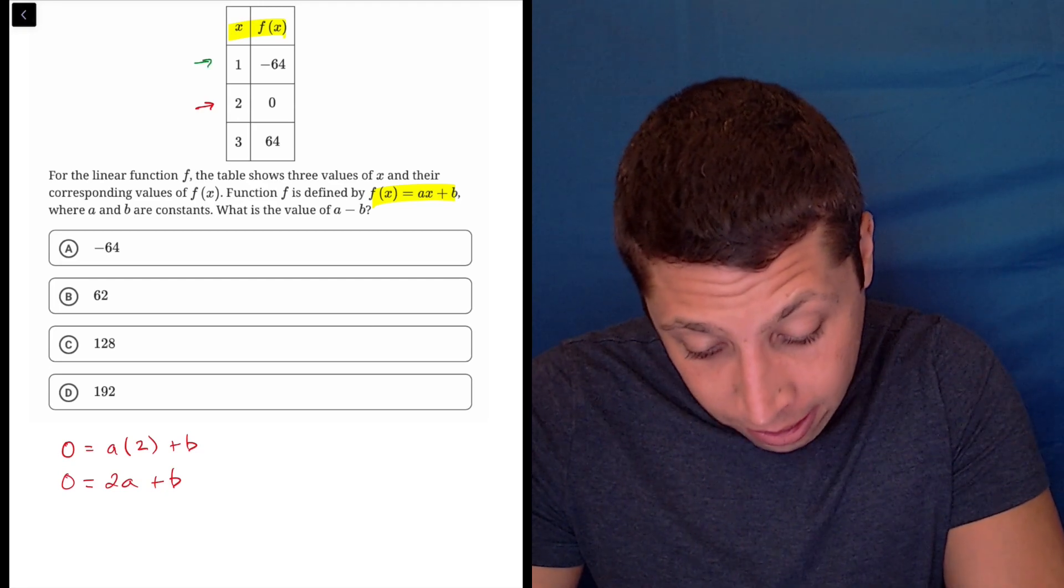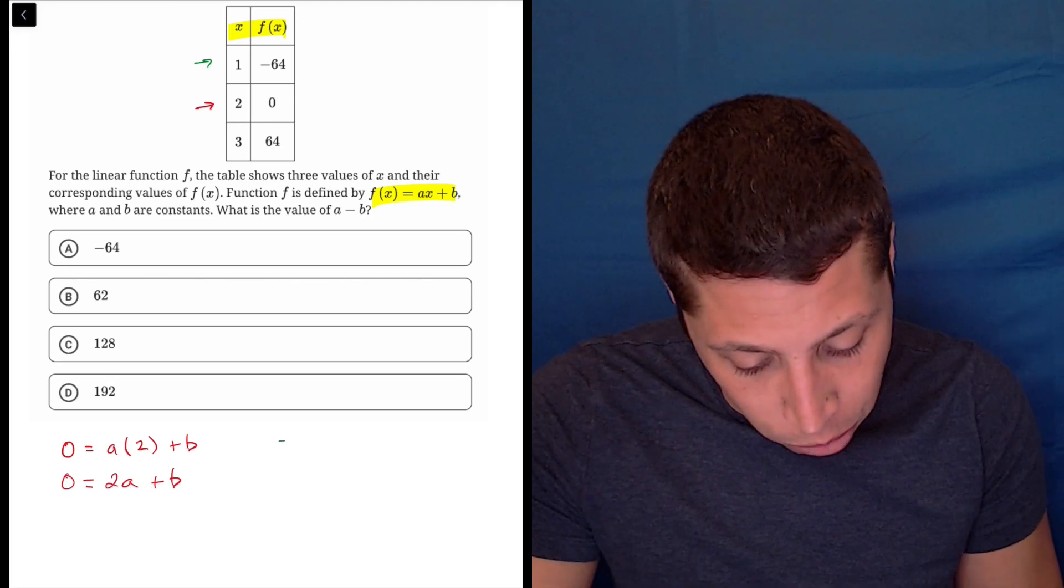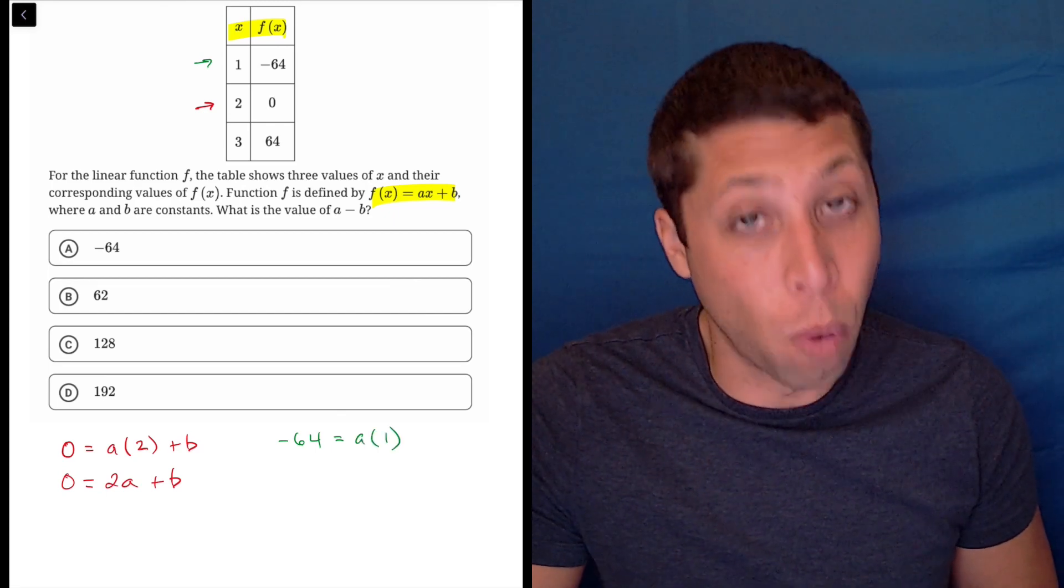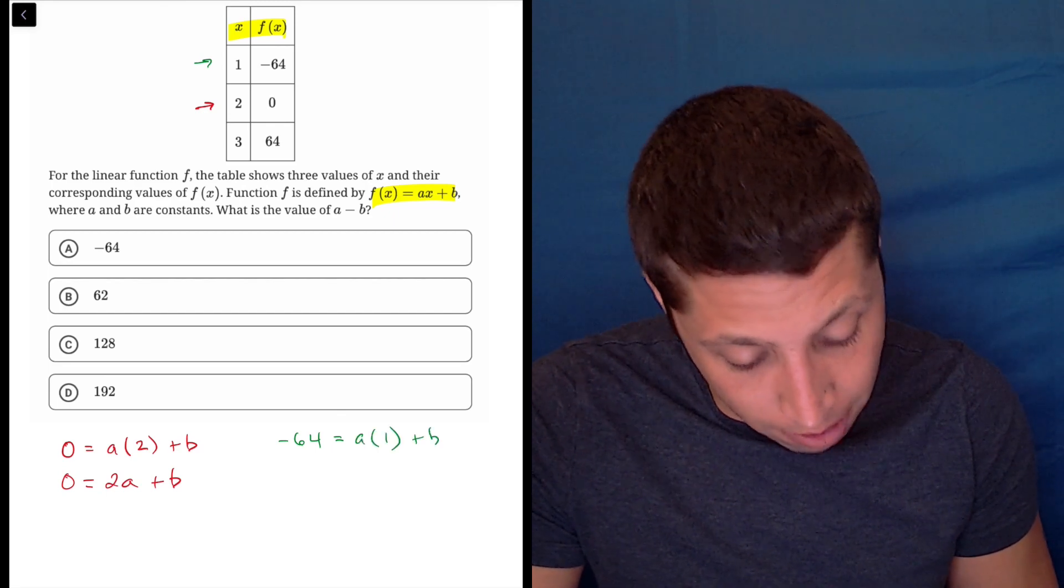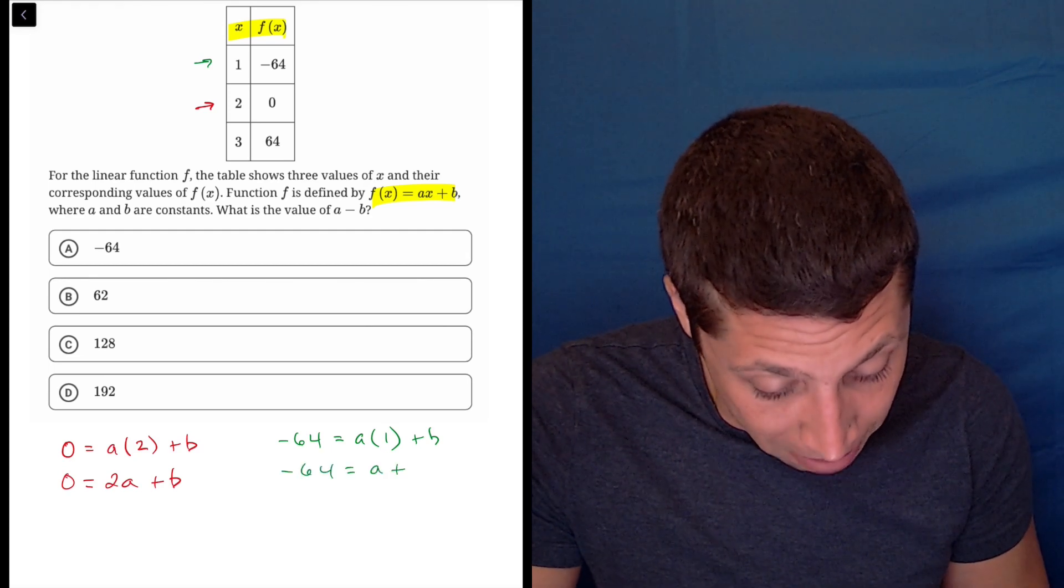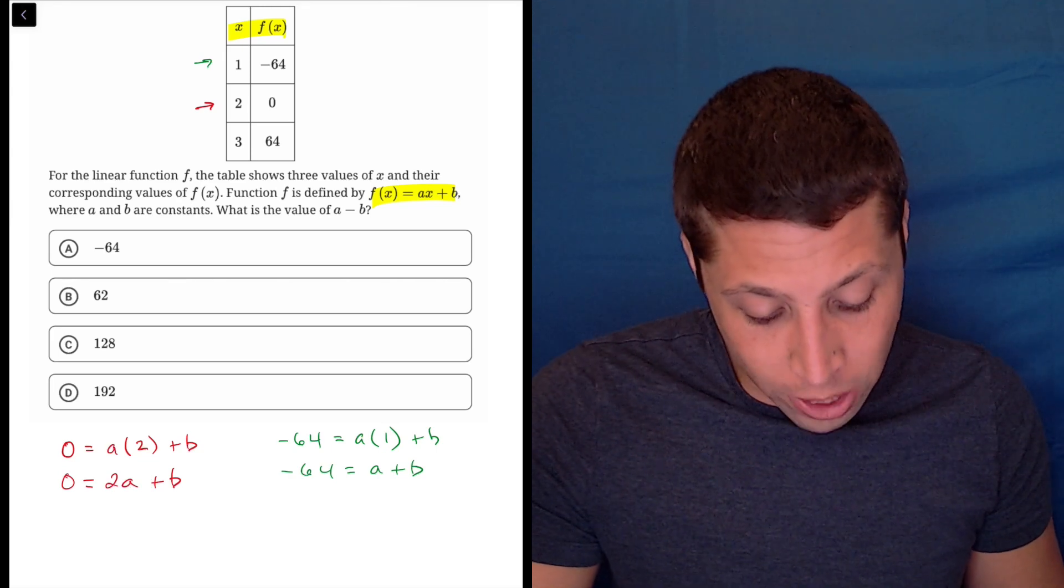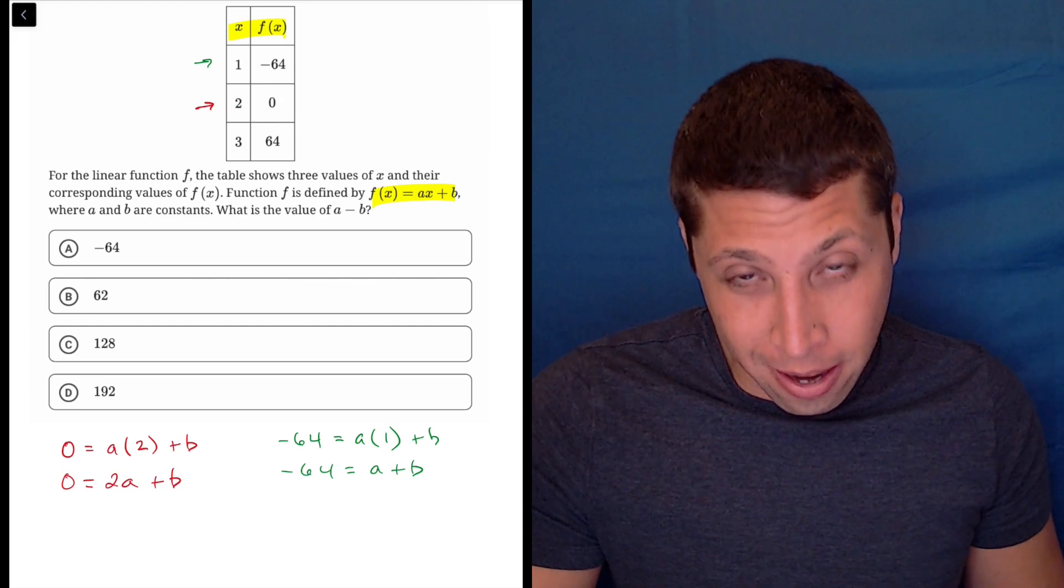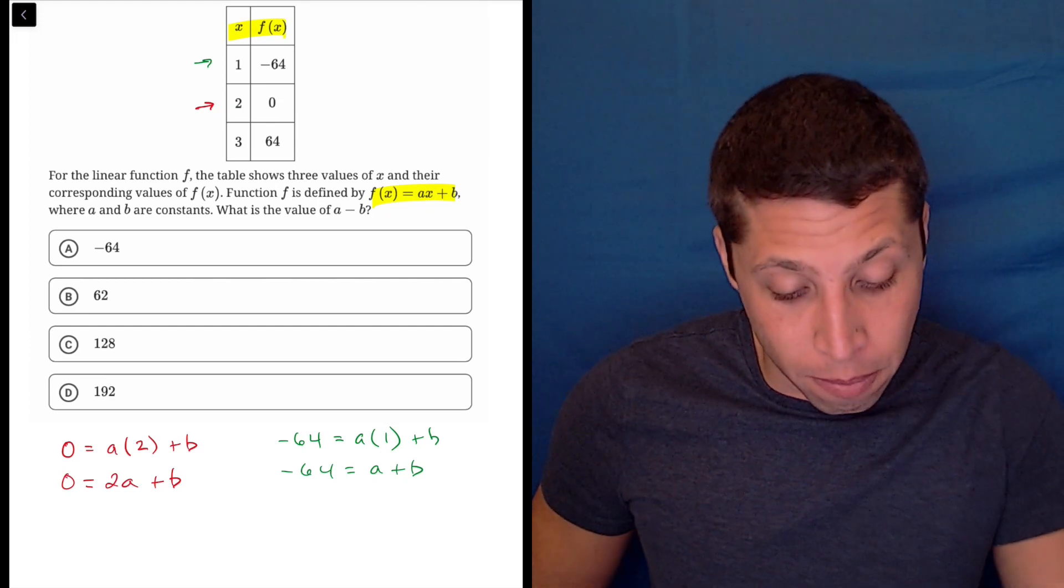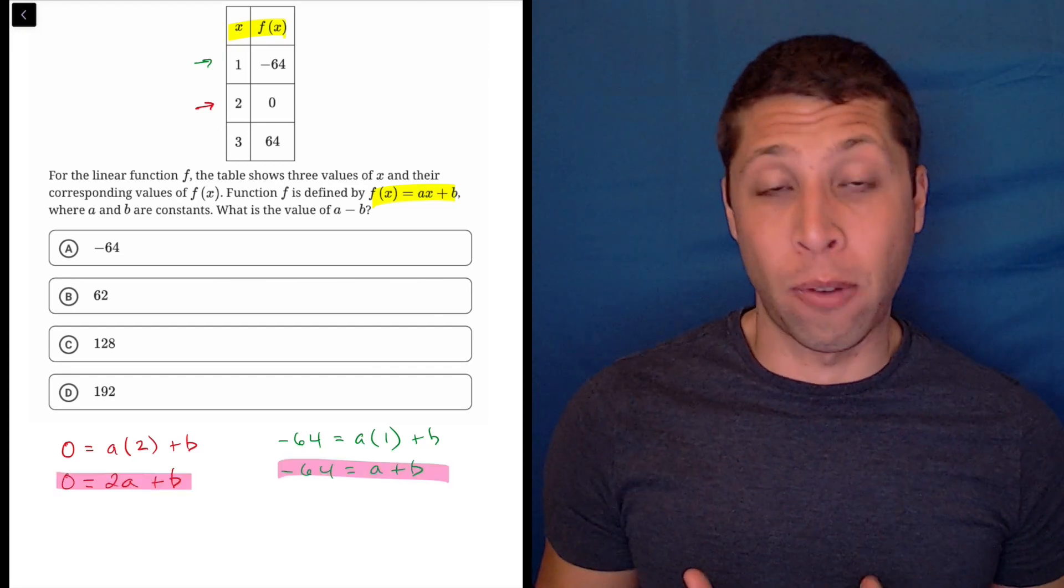So let's try instead this point here, one and negative 64. So negative 64 is the y, and a would be multiplied by one, the x plus b. So negative 64 is equal to a plus b. Well, that's nice, I mean, we still have two variables, a and b, but now we have the ability to solve because together these two equations are a system of equations.